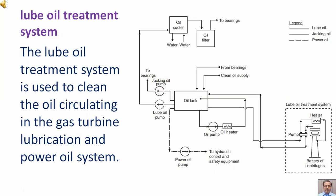The lube oil treatment system is used to clean the oil circulating in the gas turbine lubrication and power oil system. Oil is drawn by a pump from the oil tank and on completion of the desired treatment, oil is returned to the oil tank.